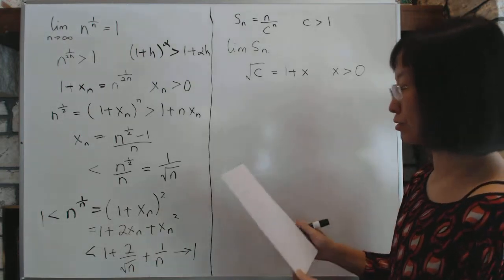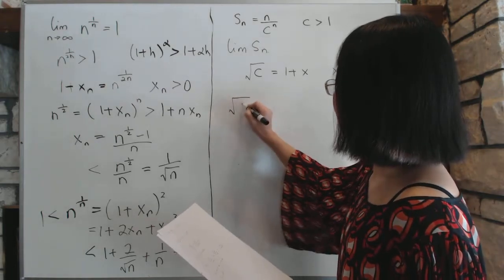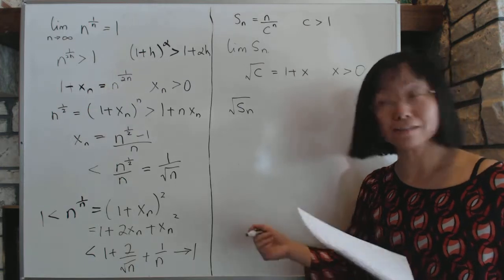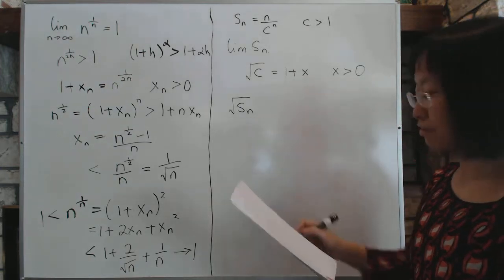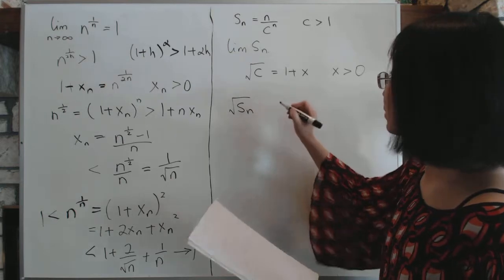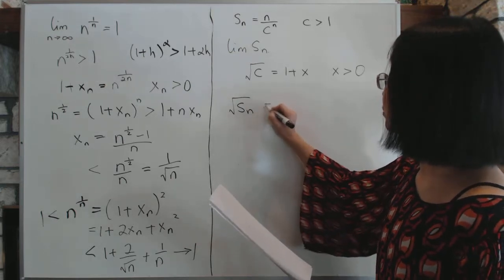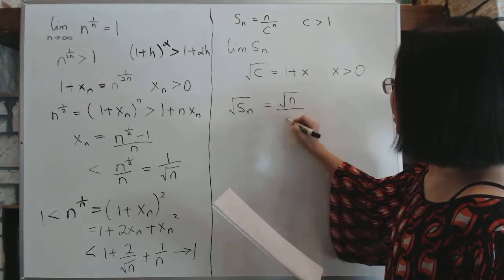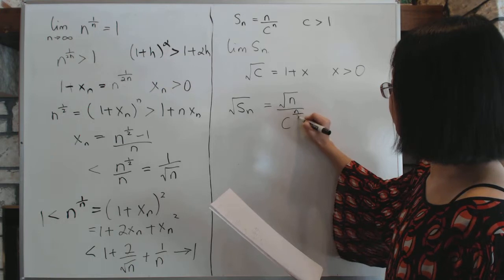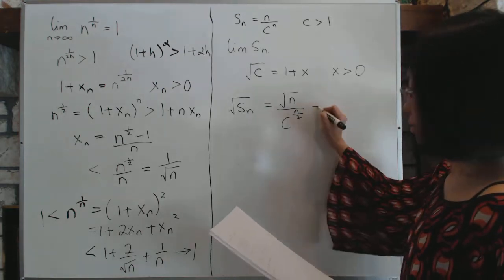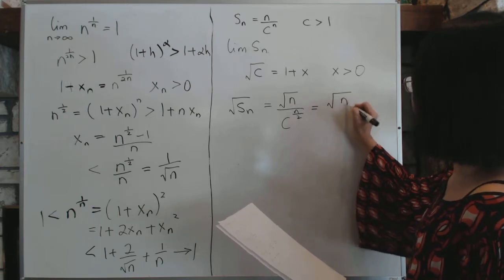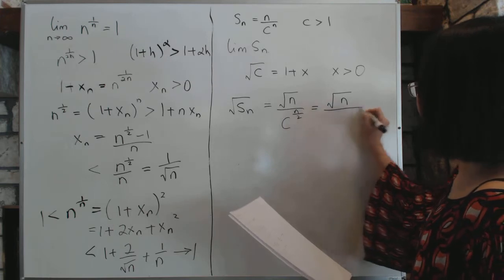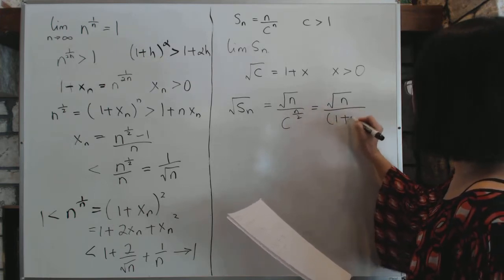So the next thing we're going to do is we're going to do something odd. We'll examine the square root of sn. Once we figure out where the square root goes, we know where sn goes itself. And this is the second trick we're going to pull. This problem relies on a lot of tricks. So the square root of sn going from this definition is square root of n divided c to the power n over 2. Now that is equal to the square root of c as defined here is 1 plus x. So that's over 1 plus x to the power n.